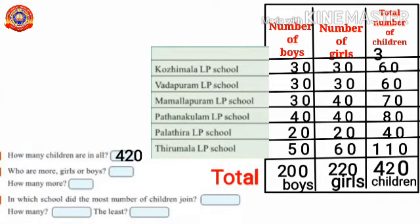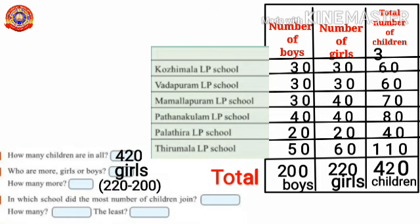Next question: who are more, girls or boys? Girls are more. How many more? Subtract 200 from 220. 220 minus 200 equals 20. So 20 girls are more.